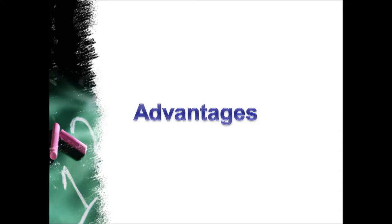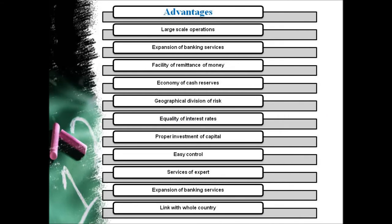Now let us discuss the advantages of branch banking system. Branch banking leads to economies of large scale operation. The branch banking system possesses the advantage of large scale operation such as division of labor and specialization. The entire working of banks may be divided into different sections such as foreign exchange section, agriculture section, etc. For each section, specialized staff can be appointed with greater resources and better training facilities, making possible a higher quality of management.